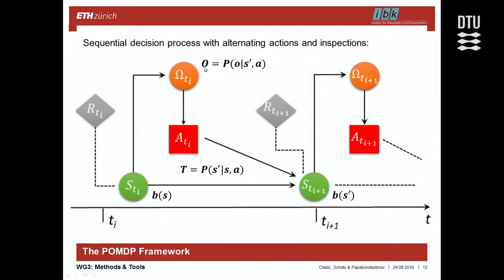Under this new framework, actions are uncertain and observations also do not come with certainty. In the system formulation, this translates into the addition of what we call the emission probability — the probability of the observation given the current state and the action taken — as well as the belief B, which signifies that we do not know the state with certainty.